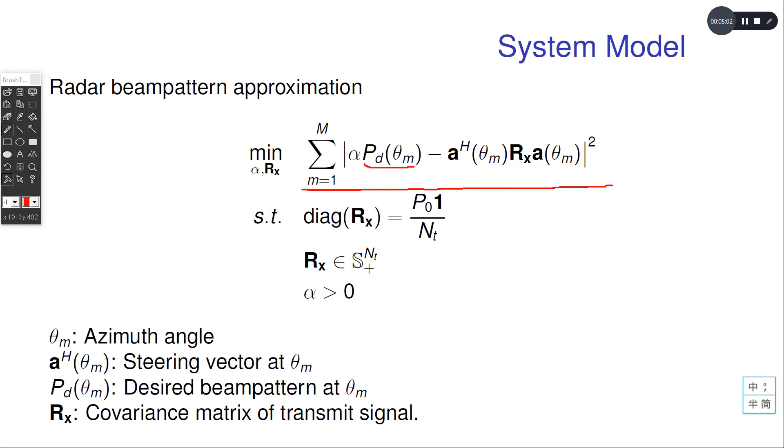Here, Pd(θm) is the desired beam pattern, and the other part corresponding to the transmit covariance matrix Rx is the real transmit beam pattern.